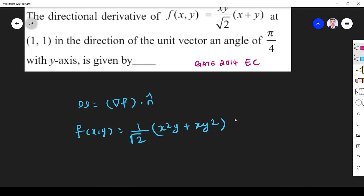Where do I have to find? I have to find at (1,1). Right? In what direction? The unit vector is in the direction of π/4 with y-axis. So this is what I have to find.